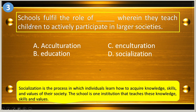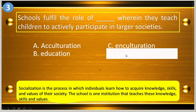Question number three: the school fulfills the role of blank, wherein they teach children to actively participate in larger societies. A, acculturation; B, education; C, enculturation; and D, socialization. The answer is letter D, socialization.